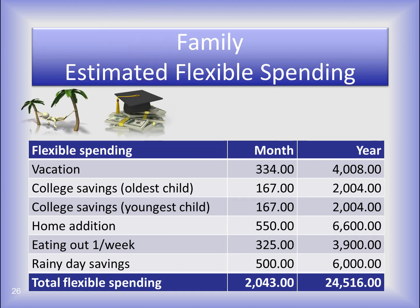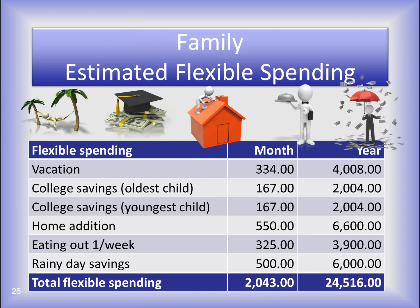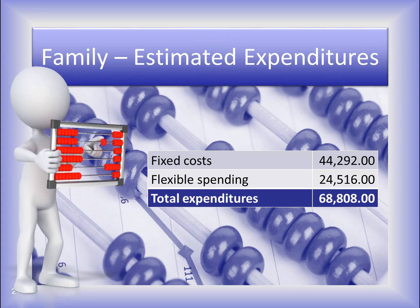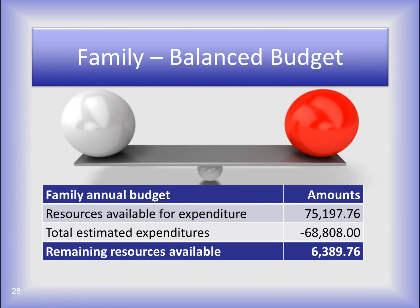The family plans a vacation, college savings, a home addition, eating out once a week, and building up the rainy day savings. They determine how much per month they want to save or spend and calculate that out to the annual amount, giving them an additional $24,516 in spending. They add their estimated fixed costs and flexible spending together to determine total estimated annual expenditures. They started with $75,197.76 of resources available, budgeted $68,808 for spending, leaving $6,389.76 remaining. They don't have to budget 100% of the resources available, and because they are not planning to spend more than the resources available, they have a balanced budget.